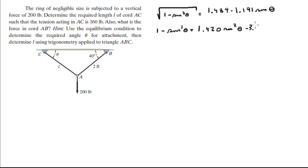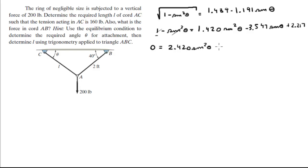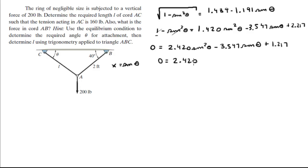Subtracting 1 from both sides and adding sine squared theta to both sides, we get: 0 equals 2.420 sine squared theta minus 3.547 sine of theta plus 1.217. Substituting x for sine of theta, this becomes: 0 equals 2.420x squared minus 3.547x plus 1.217, which we solve using the quadratic formula.